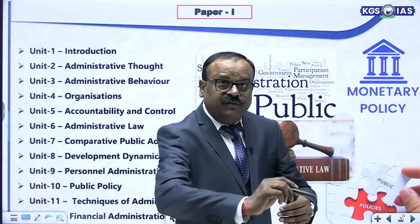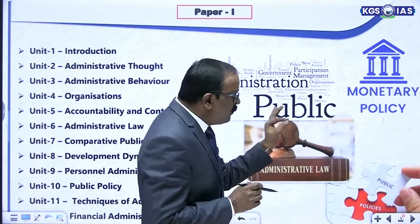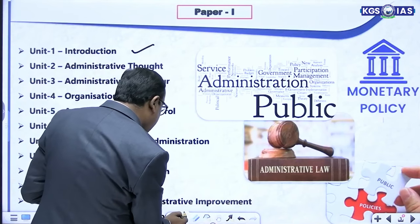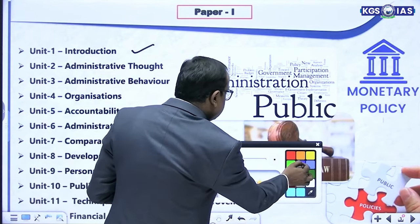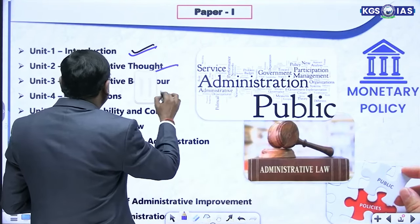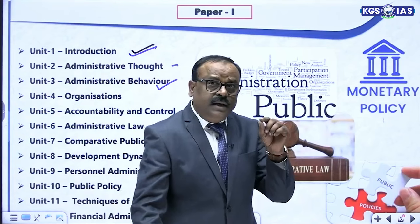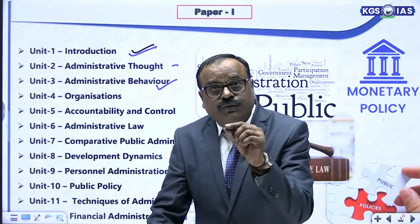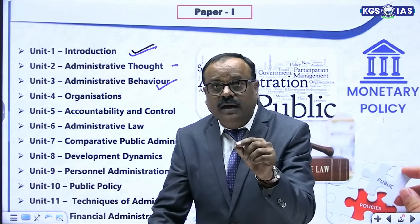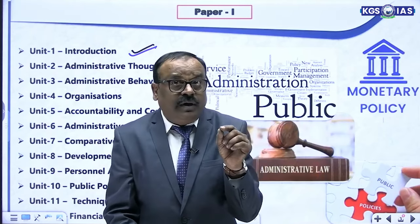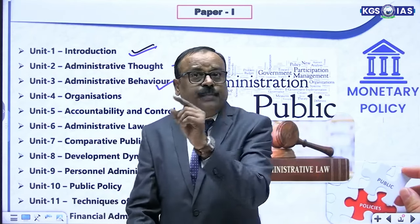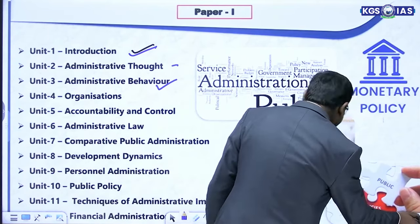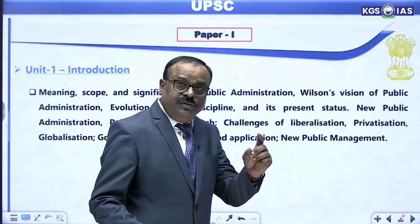When we see the syllabus of paper 1, we get several things which are interrelated with each other. Several topics are interrelated — introduction, thought, behavior. We will discuss later how they are interrelated, and we will also try to find out the interrelations between the units of paper 1 and the topics of paper 2 in this class. In paper 1 there are 12 units, and in paper 2 there are 14 units.